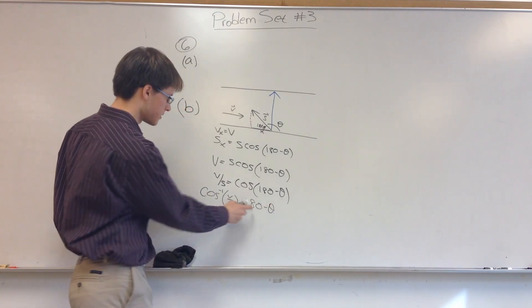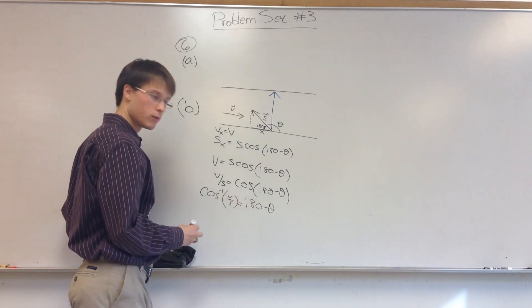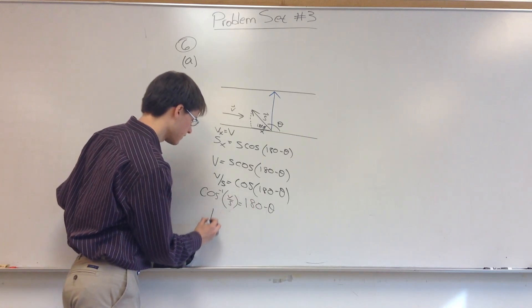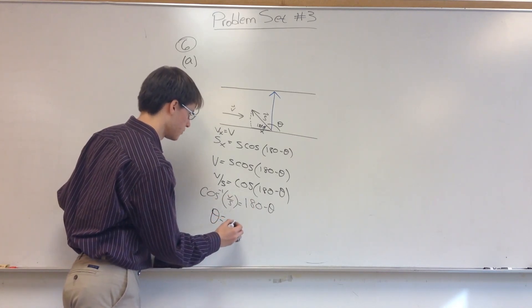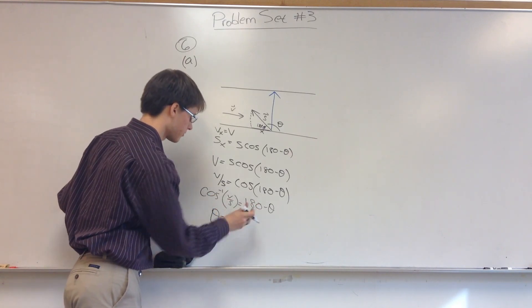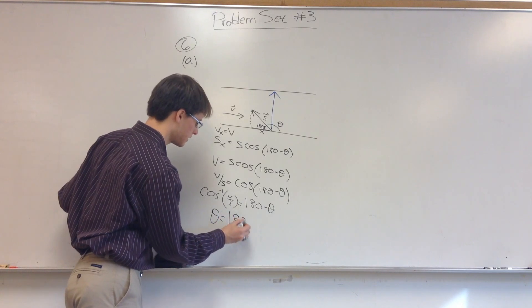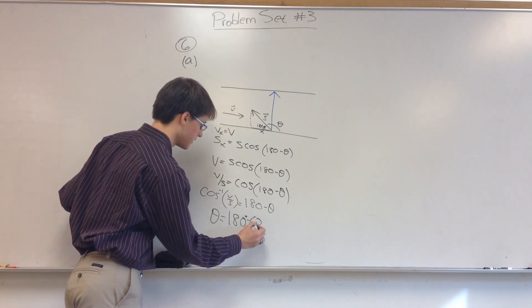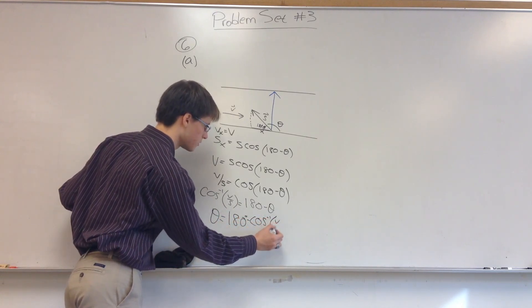which means that theta, if we subtract 180 and then multiply by negative 1 to get rid of the negative sign, we're going to have that theta is equal to 180 degrees minus the inverse cosine of V over S.